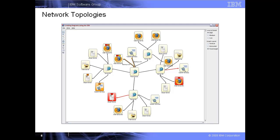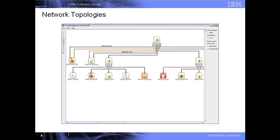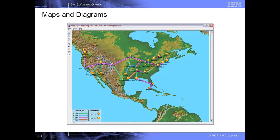JVUES Diagrammer allows you to automate the presentation of this network by choosing different types of visual representation and different placement options. In this other example, we have a diagram which is displayed on top of a physical map. This is an example of two JVUES products being used together — in this case, IBM iLOG JVUES Diagrammer and JVUES Maps.